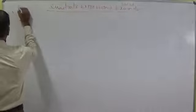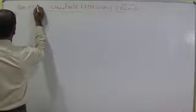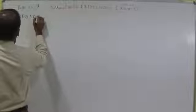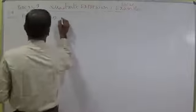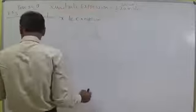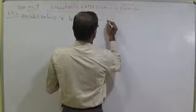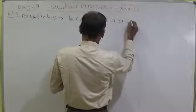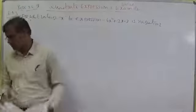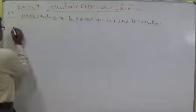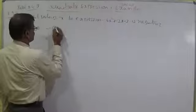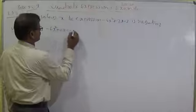Example 3, page number 80-81. For what values of x is the expression minus 6x² plus 2x minus 3 negative? For negative, you should write the expression minus 6x² plus 2x minus 3 less than 0.